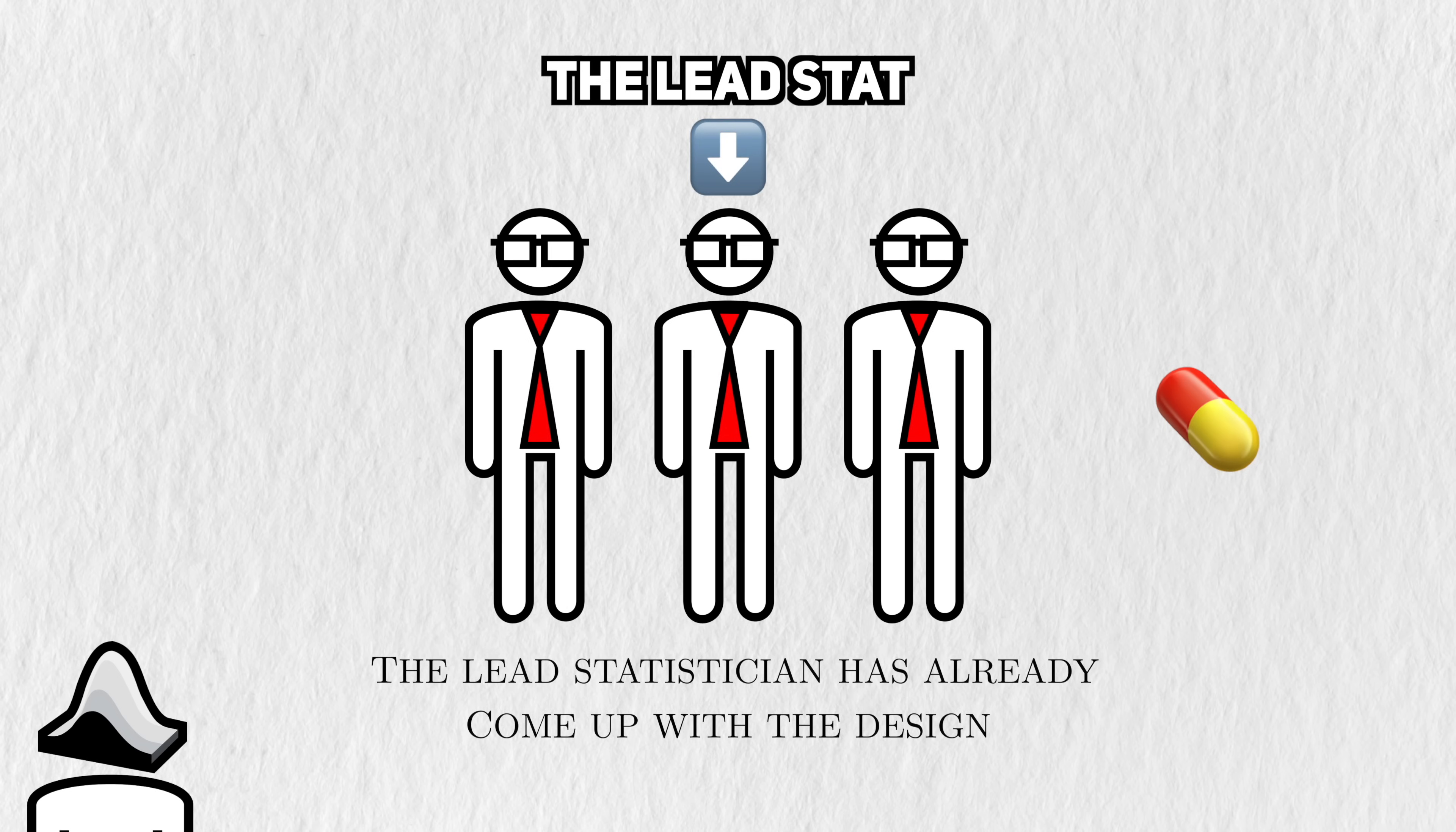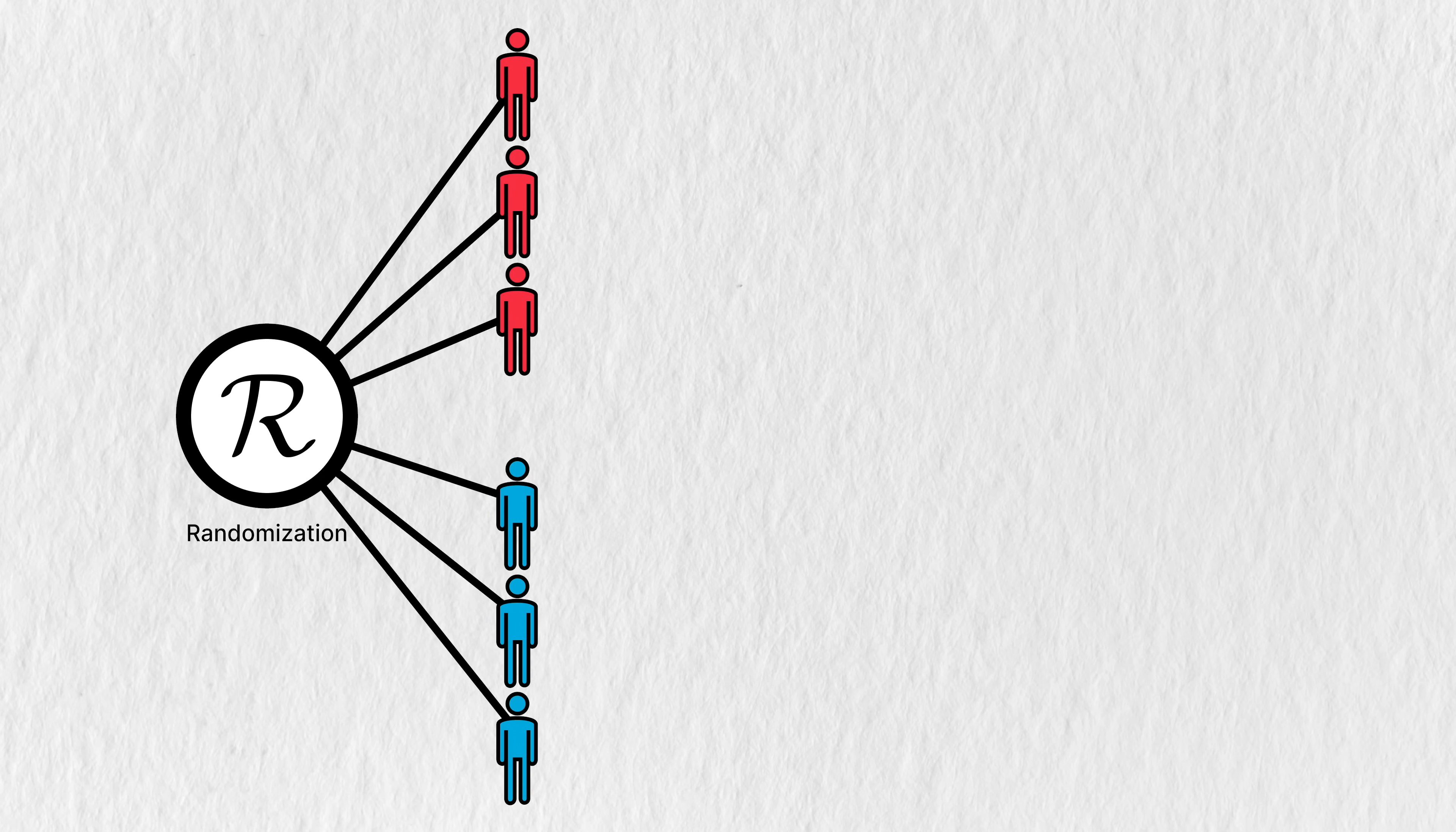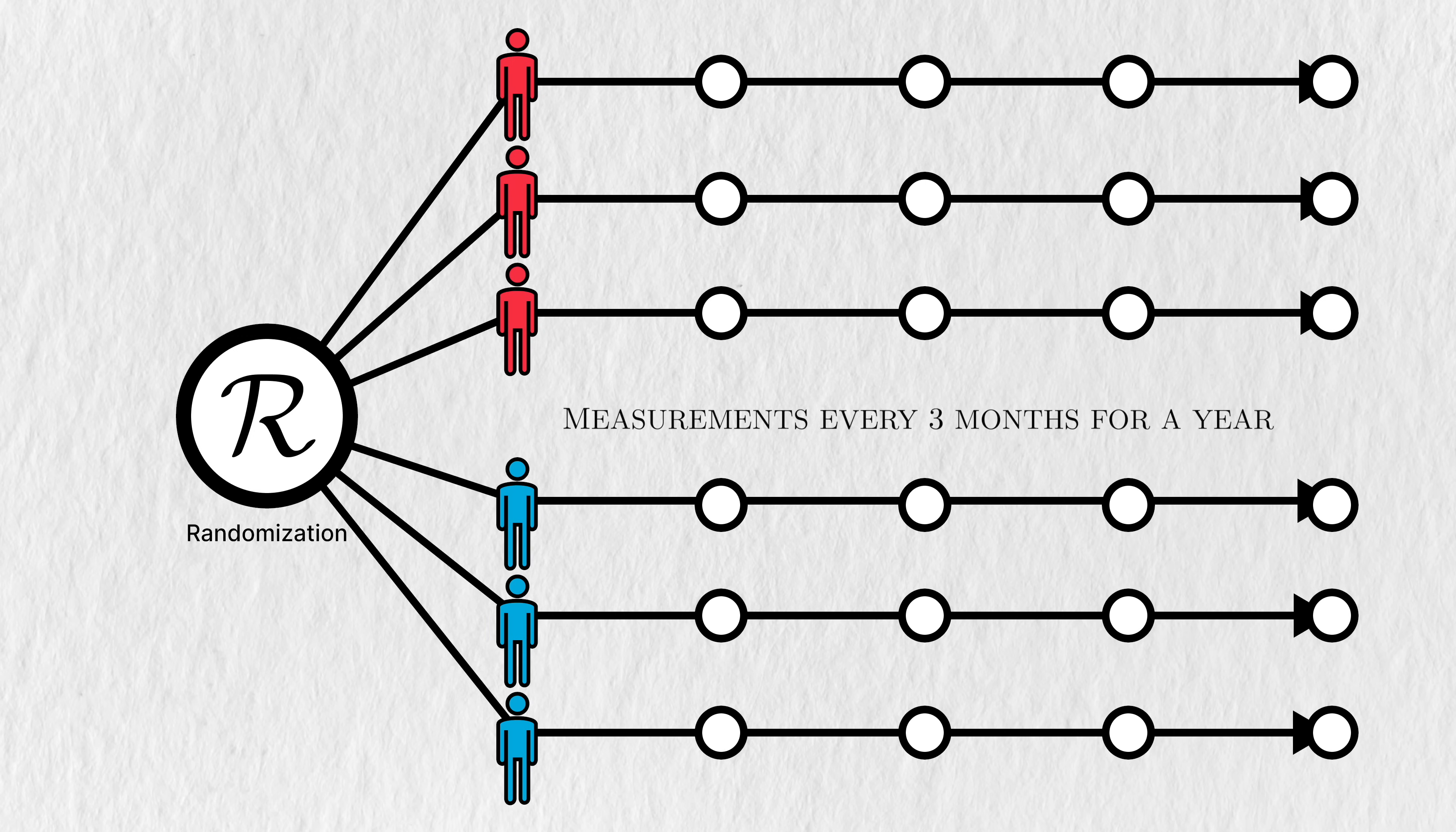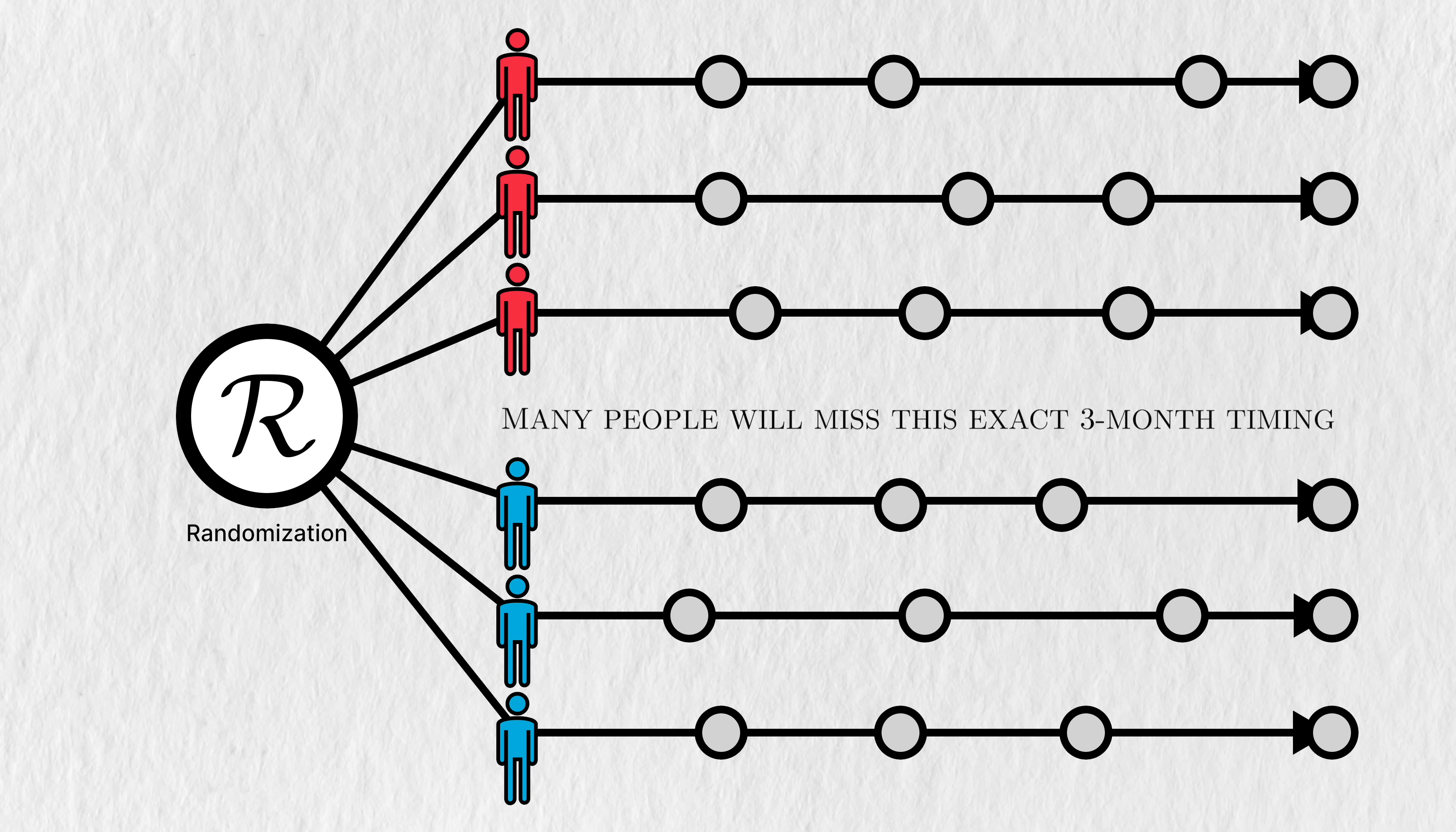The lead statistician has already come up with the study design. Patients will be randomized to either placebo or treatment. The company will collect blood from each person every three months for a year to measure blood glucose. Many of the participants will miss this exact three-month timing,